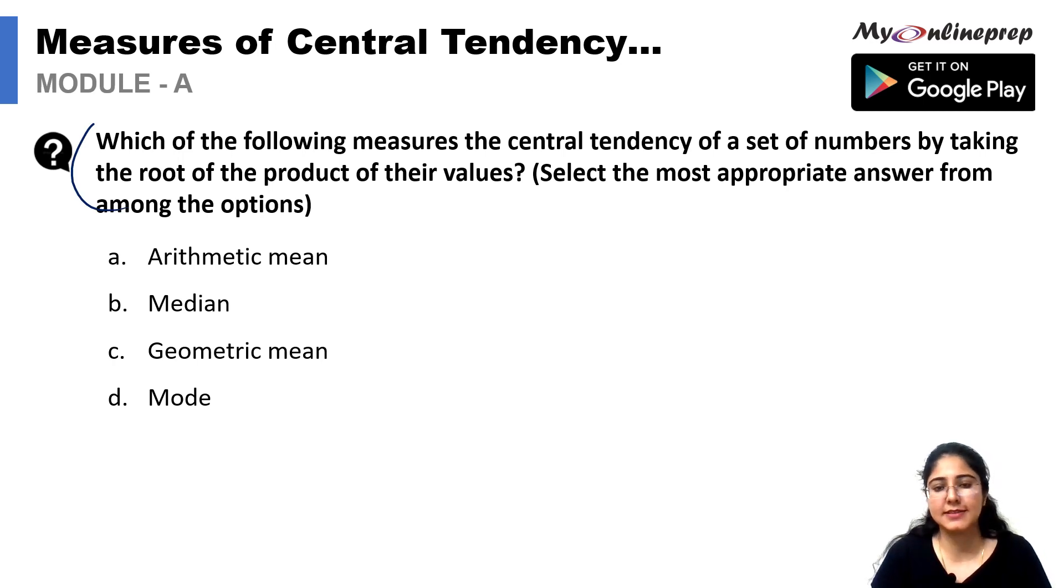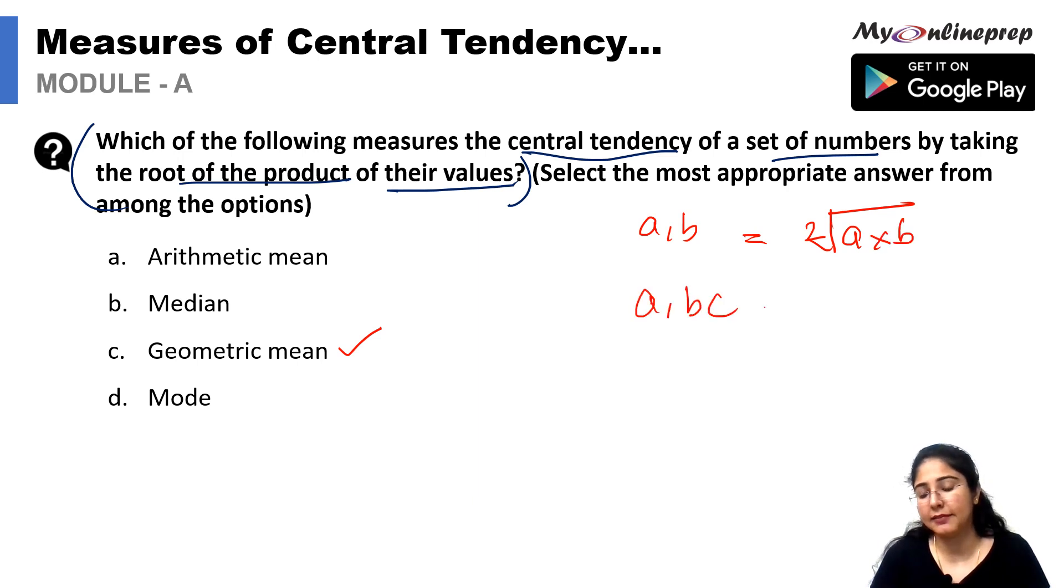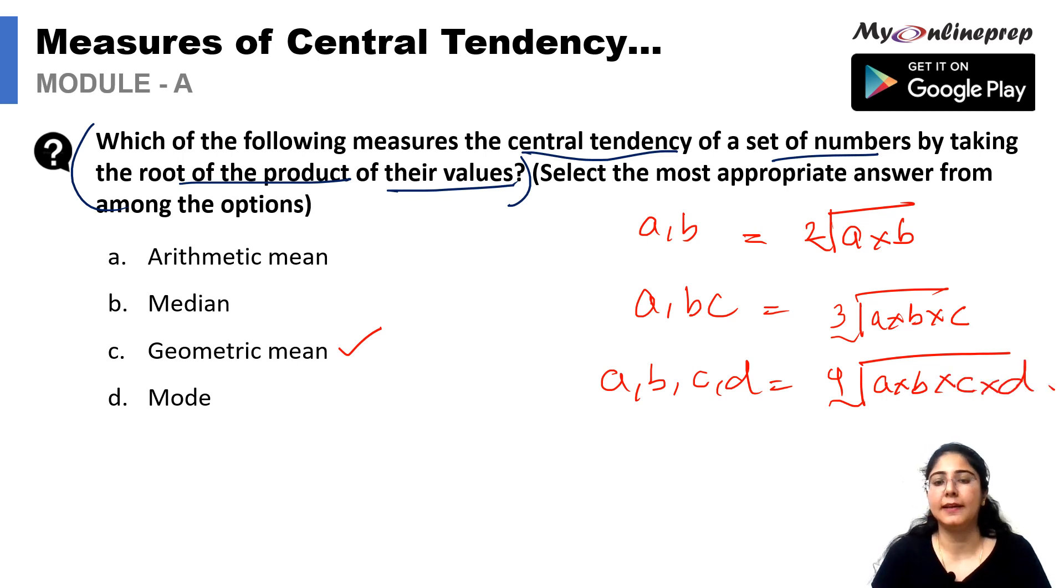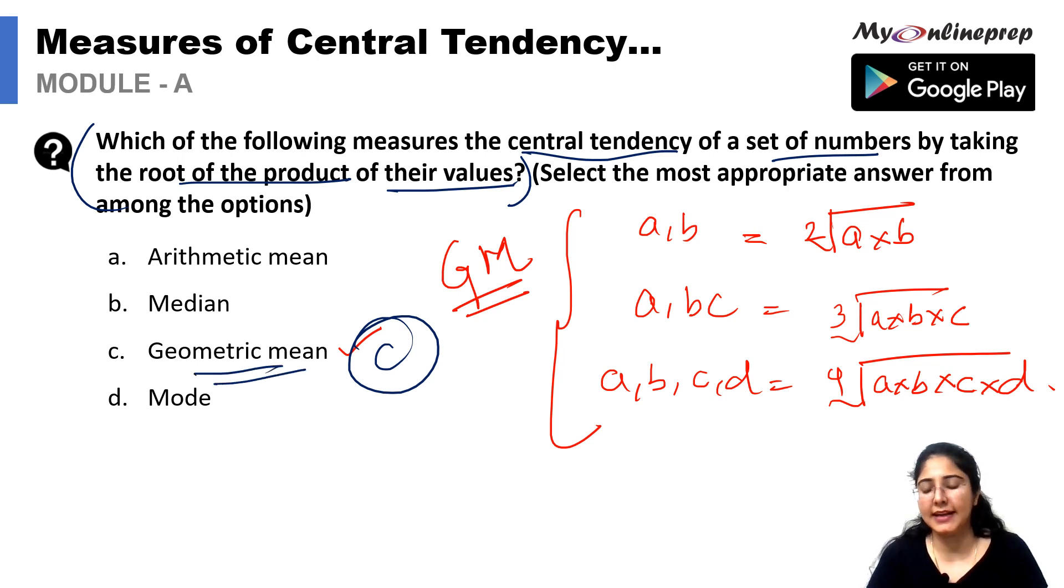Next is which of the following measures the central tendency of a set of numbers by taking the root of the product of their values. As we all know, this is geometric mean. Because geometric mean, if we have a and b two numbers given, the formula would be square root of a multiplied by b. If we have 4 numbers given, it would be 4th root of a multiplied by b multiplied by c multiplied by d. Option C is the correct answer because under geometric mean, we measure central tendency by taking the root of the product of their values.